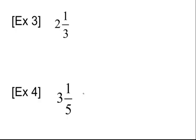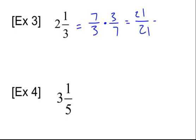Example three is a little tougher, because now we have a mixed number. Before I can find the reciprocal, I have to make it an improper fraction instead of a mixed number. You do two times three plus one: two times three is six, plus one is seven, so it's seven over three. Now it's easy to find the reciprocal — I just flip it and get three-sevenths. Seven times three is twenty-one, three times seven is twenty-one, and that's one. So my reciprocal is three-sevenths.